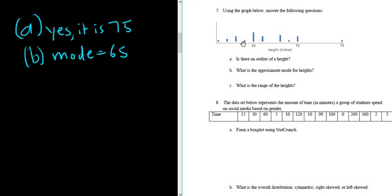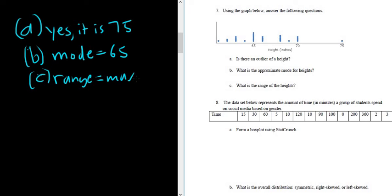So this is 64, 63, 62, 61. The first one here is 61. The range is the max minus the min. So in this case, the maximum height is 75 and the minimum height is 61. So the range is 14 in this problem. That's it, I hope that was helpful.